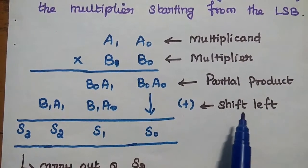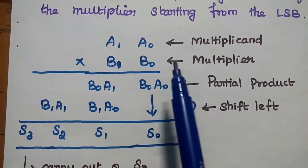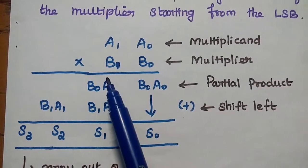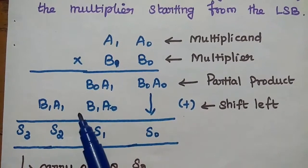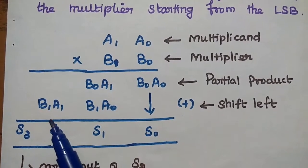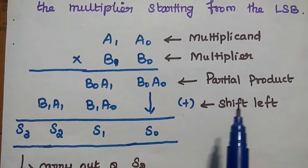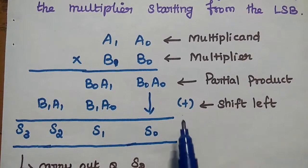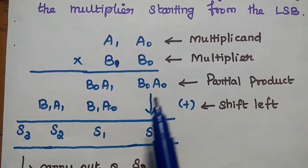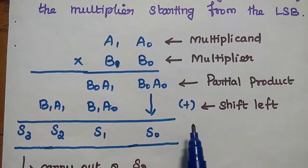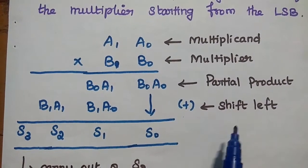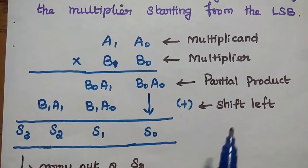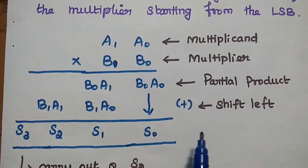The next step is shifting to the left side. As we move on to the next bit of the multiplier, we have to shift the position of the partial products. Finally, we add all the values. So there are 3 steps to be followed: first is partial product, next is shifting, and third is addition.